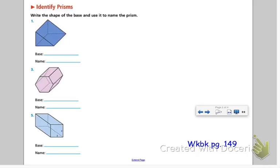So even though there are three rectangles here, this is actually a triangular prism because the bases are triangles.